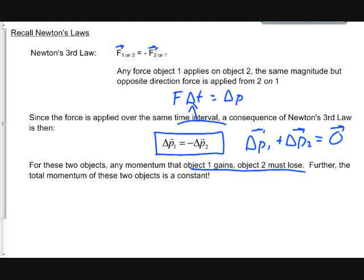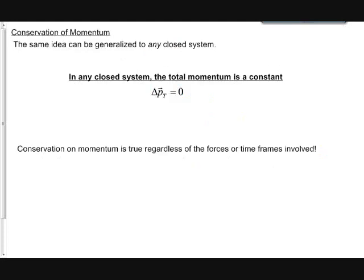But notice we've only considered this for two objects. But hopefully you can see that we can actually apply this to as many objects as we wanted to. And we can say then that for any closed system, total momentum is a constant. So no matter how many particles I have, no matter how many objects I have, if they're the only ones that I'm considering and they're in a closed system, the total momentum, if I add up all the momentum for each single particle or object, the total would always be the same value. It would never change.